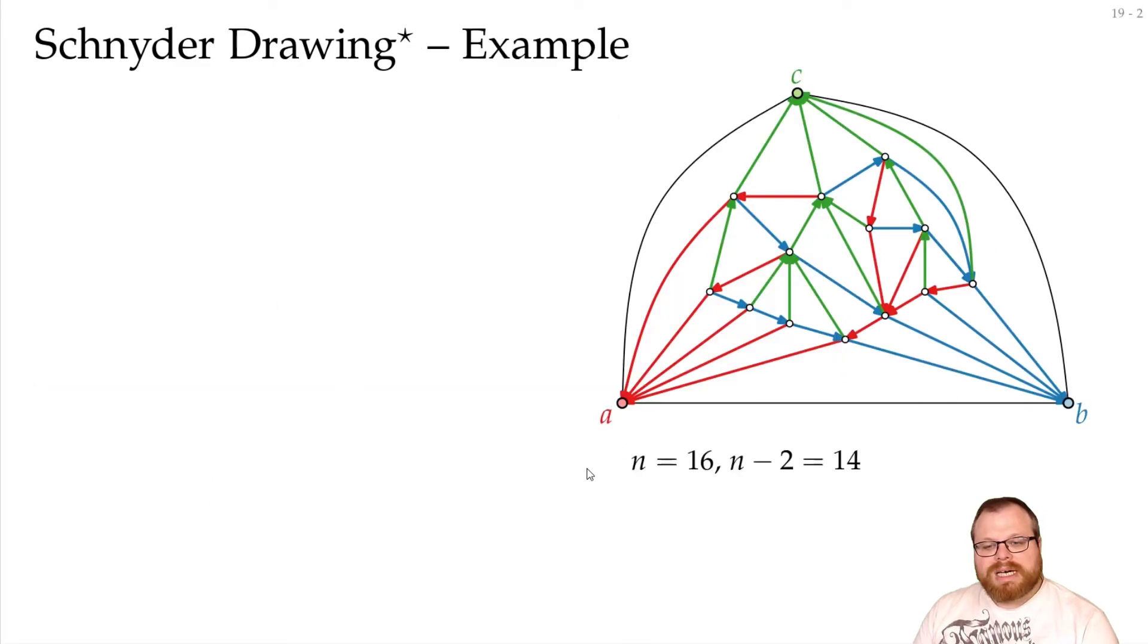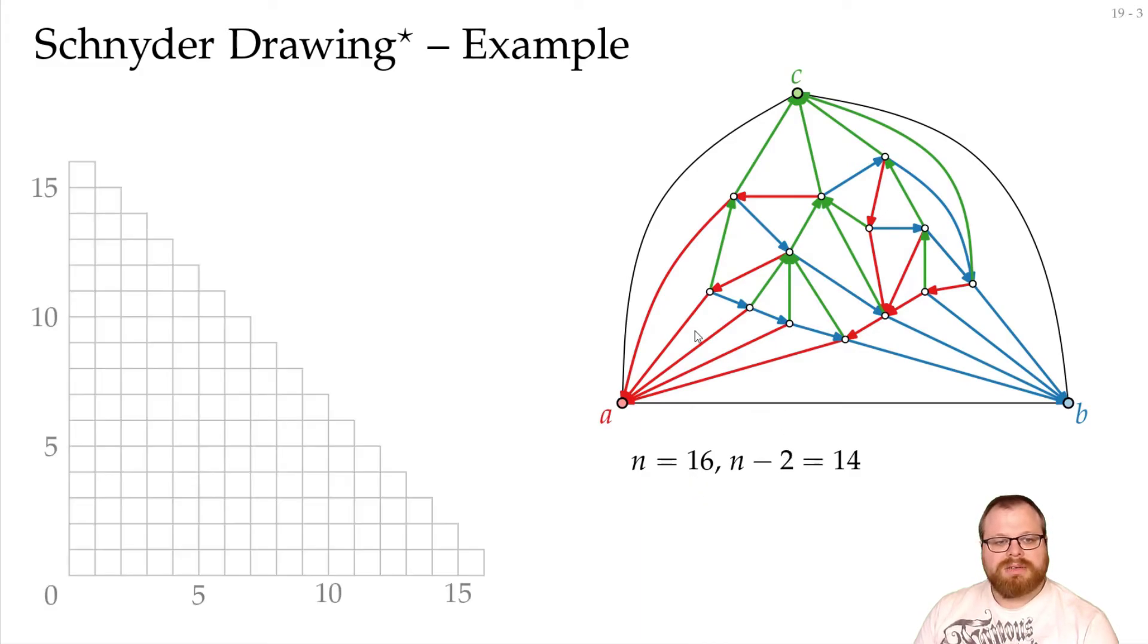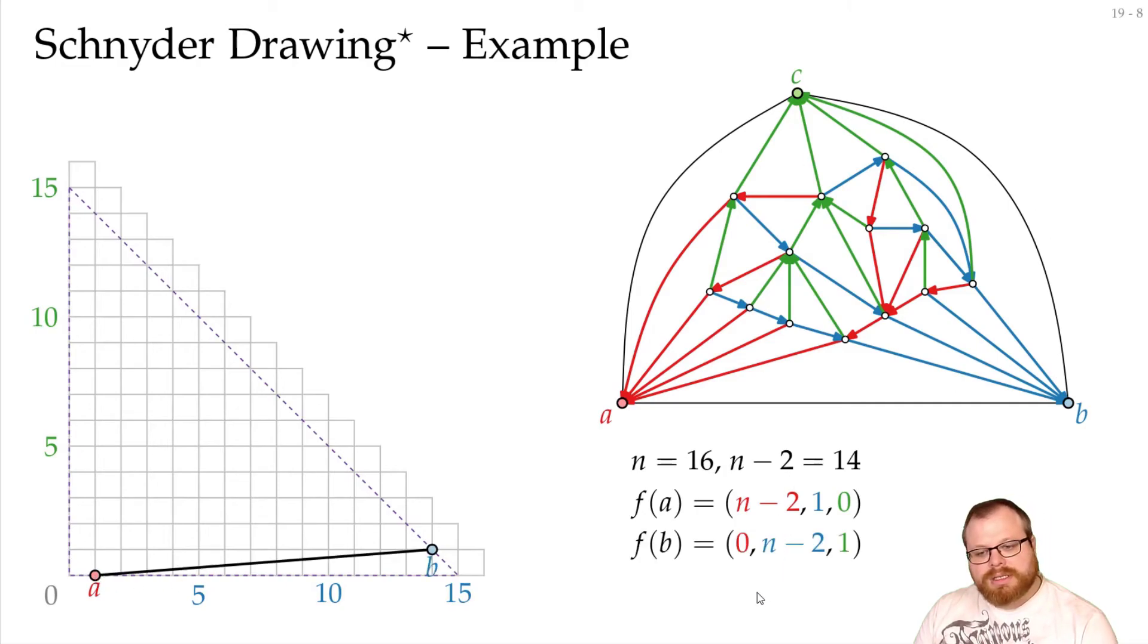Again the same example. We have 16 vertices, so n minus 2 is 14, means we need a 14 by 14 grid. And the green and blue numbers give us the 2D coordinates. Now for a, we said we have n minus 2, 1, 0, so we place it here. B, it's exactly the same. We have 0, n minus 2, 1, so we place it here. And for c, we have 1, 0, n minus 2, so we place it here. So everything will lie inside this triangle.